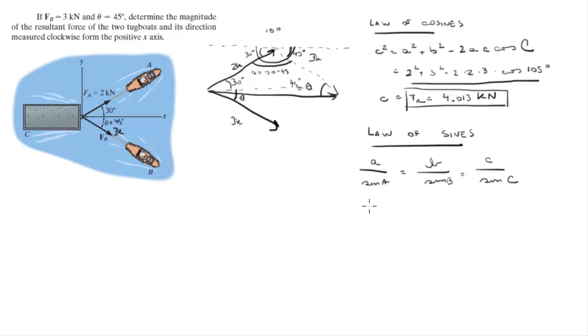So we plug in the numbers and we get 3 over sin of C. Let's call this angle C. So I'm talking about this angle right here. This angle is equal to 4.013 over the sine of 105, which is this angle right here. And you know this is 4.013.